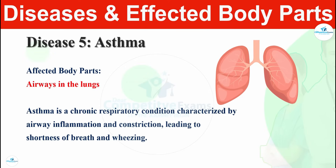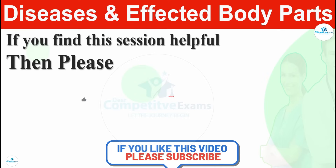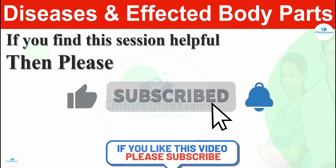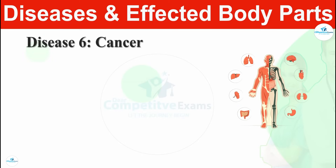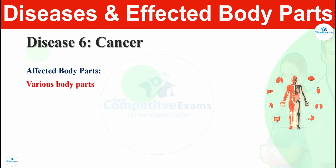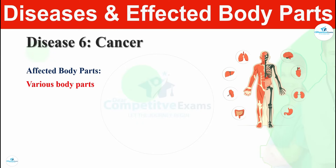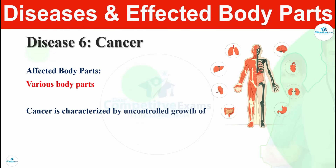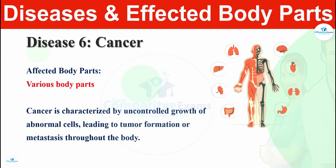If you find this session helpful, please subscribe and share your comment at the end of this video. Disease number six is cancer. Cancer can affect various parts of the body — there is no particular part, it can affect any part. Cancer is characterized by uncontrolled growth of abnormal cells that leads to tumor formation or metastasis throughout the body.